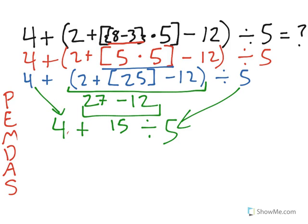Let's see, we have an addition problem, 4 plus 15, and a division problem, 15 divided by 5. Well, the order of operation tells me that division comes first. So 15 divided by 5 is equal to 3.